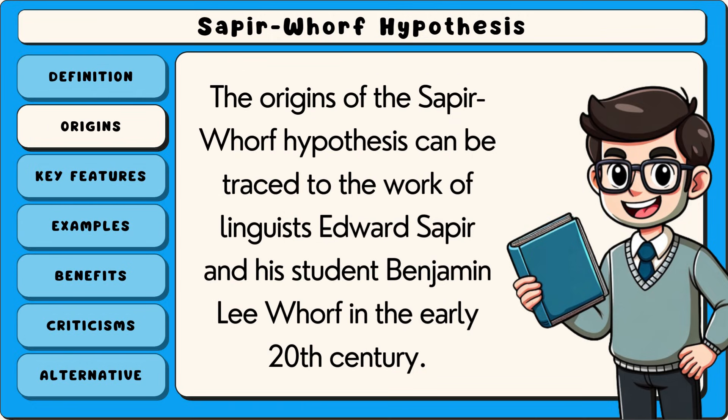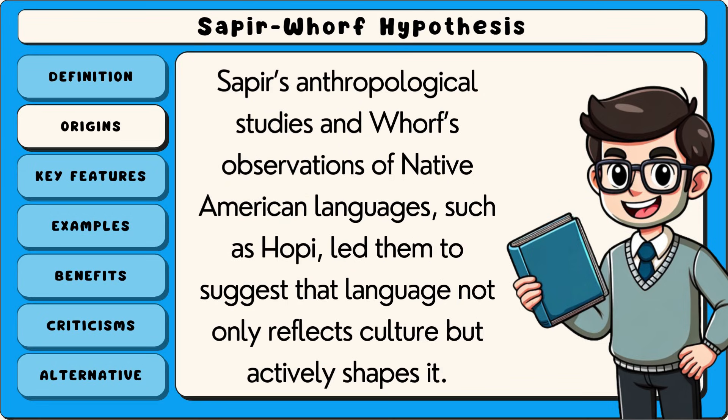The origins of the Sapir-Whorf hypothesis can be traced to the work of linguist Edward Sapir and his student Benjamin Lee Whorf in the early 20th century. Sapir's anthropological studies and Whorf's observations of Native American languages, such as Hopi, led them to suggest that language not only reflects culture but actively shapes it.